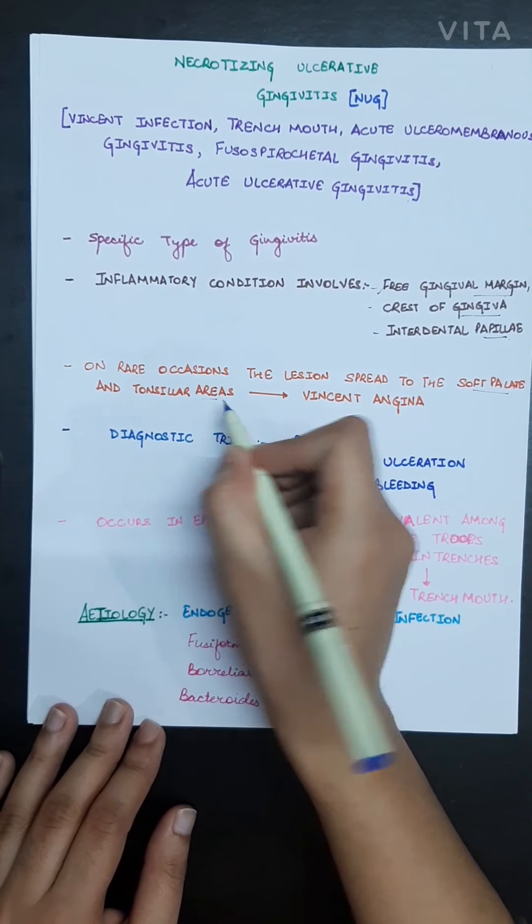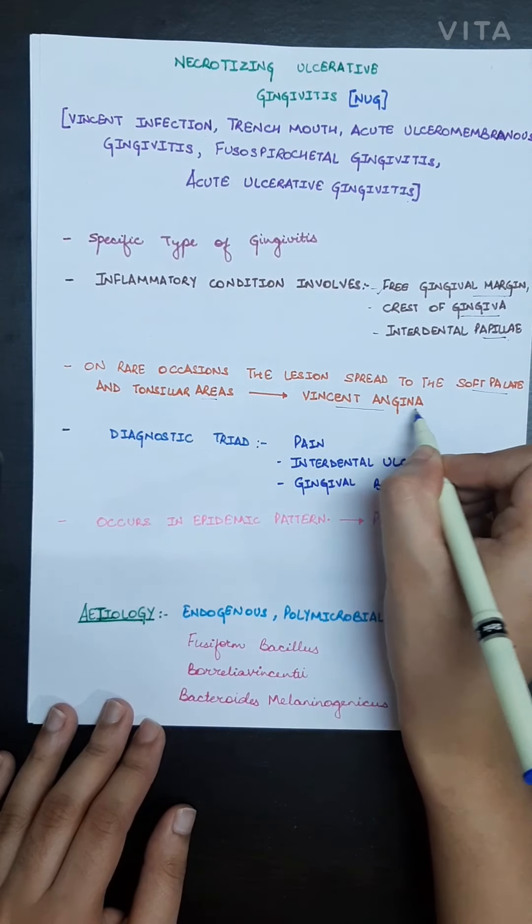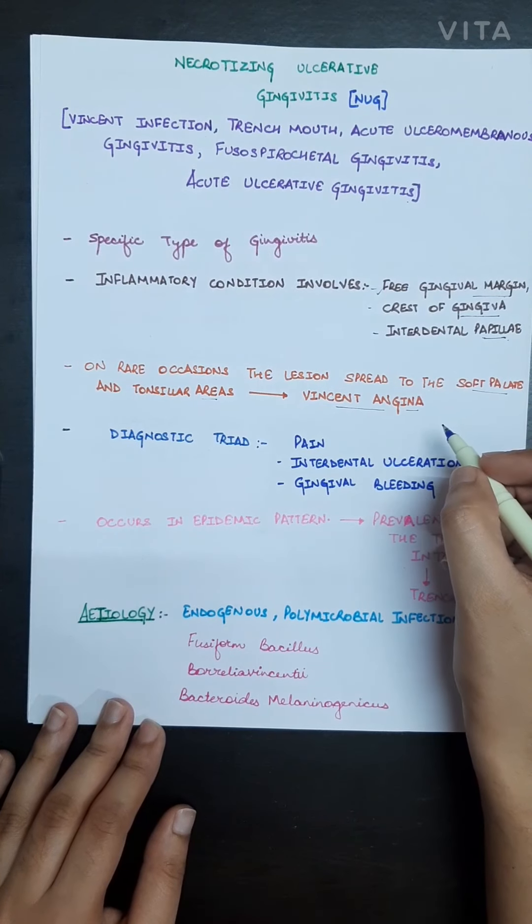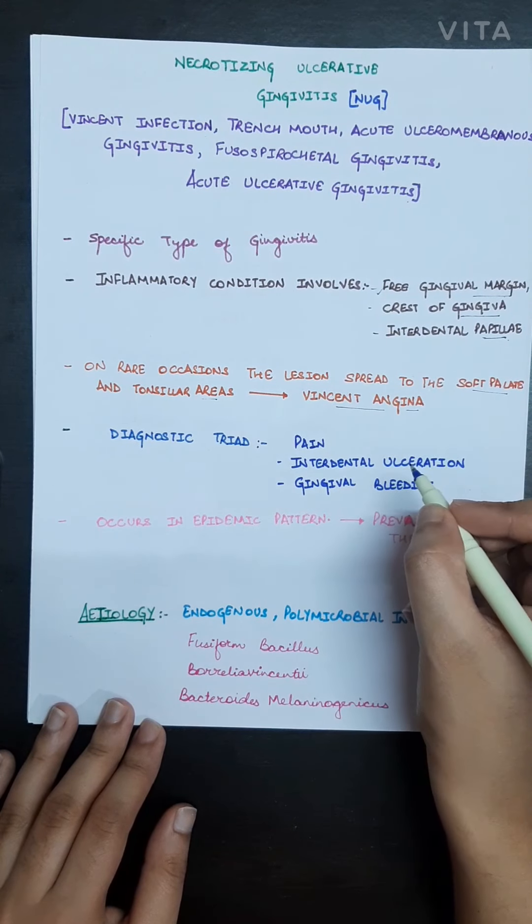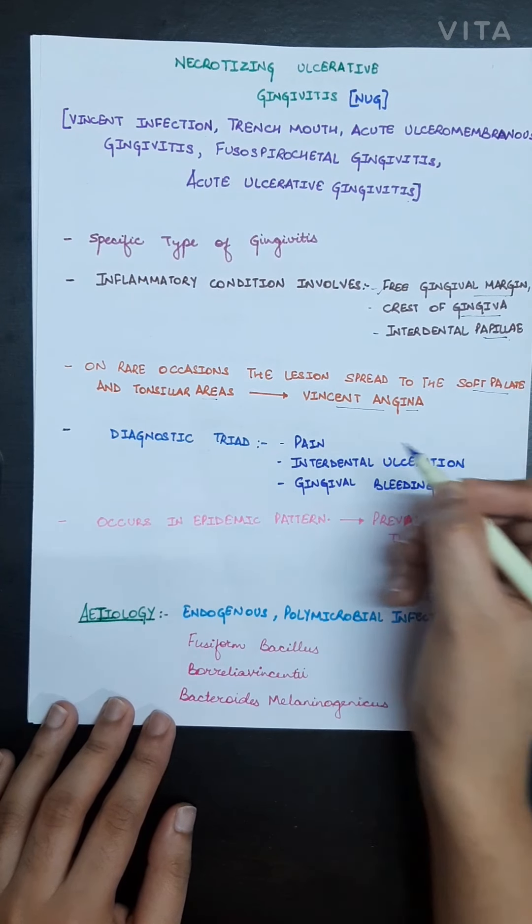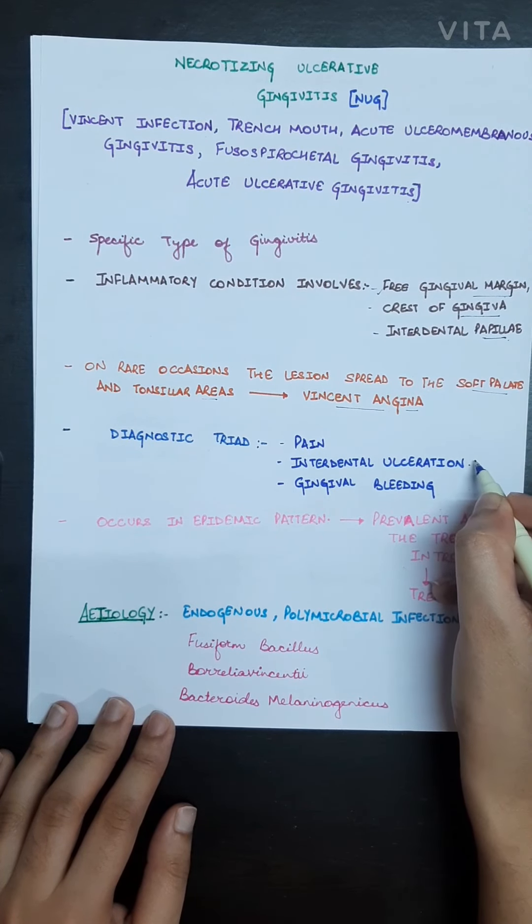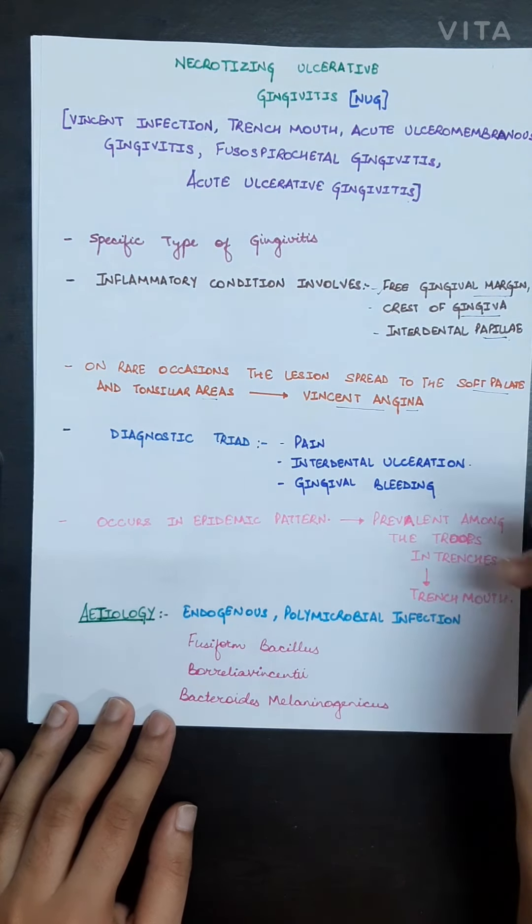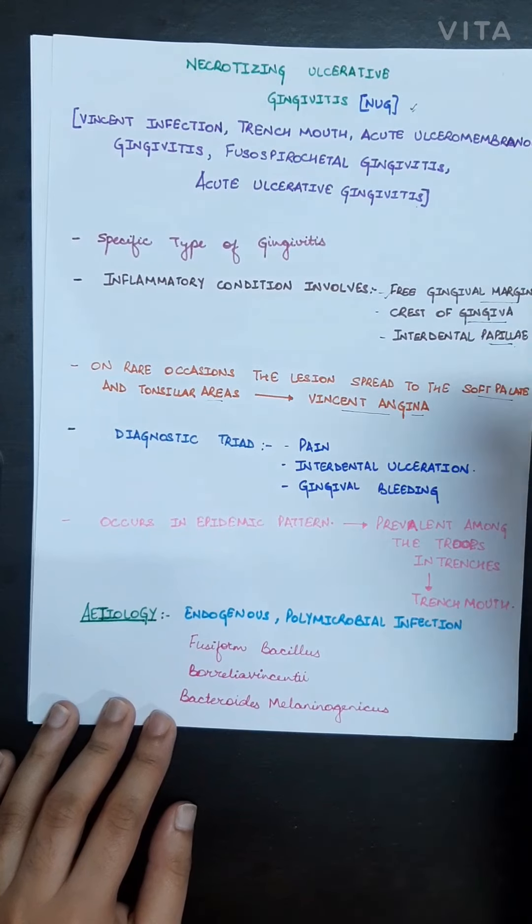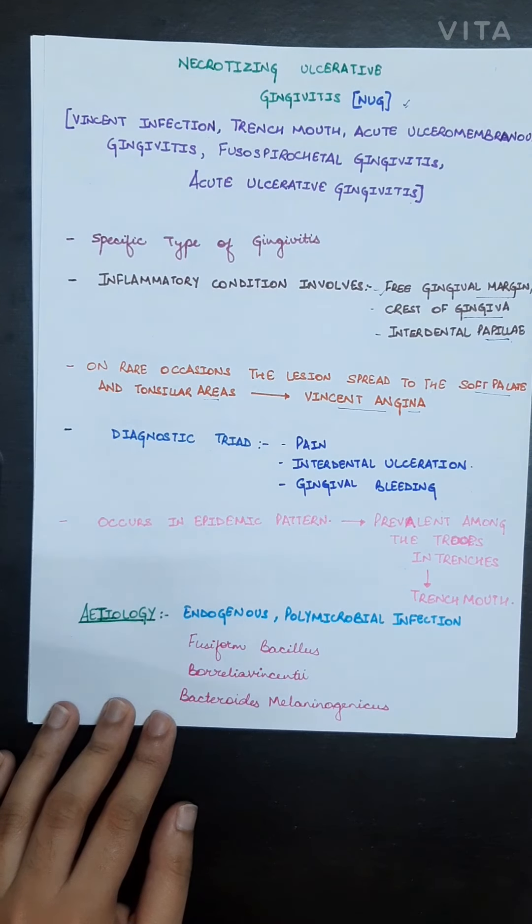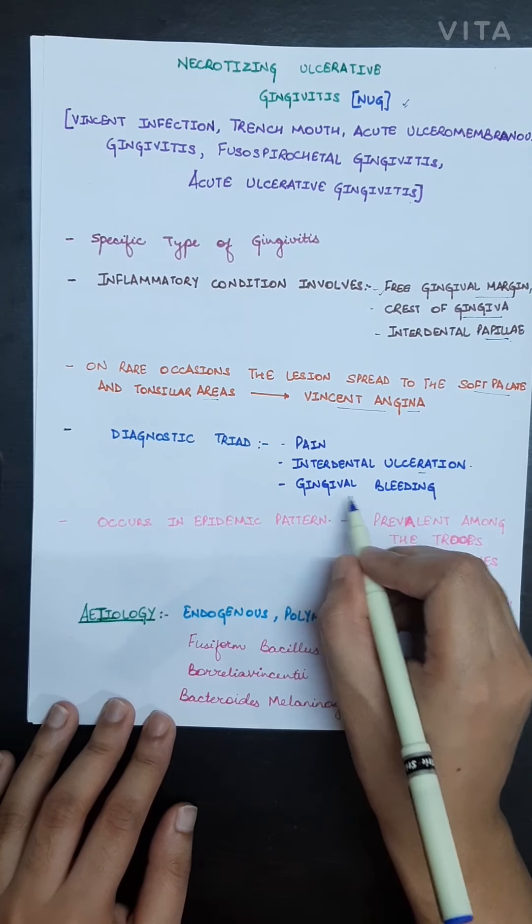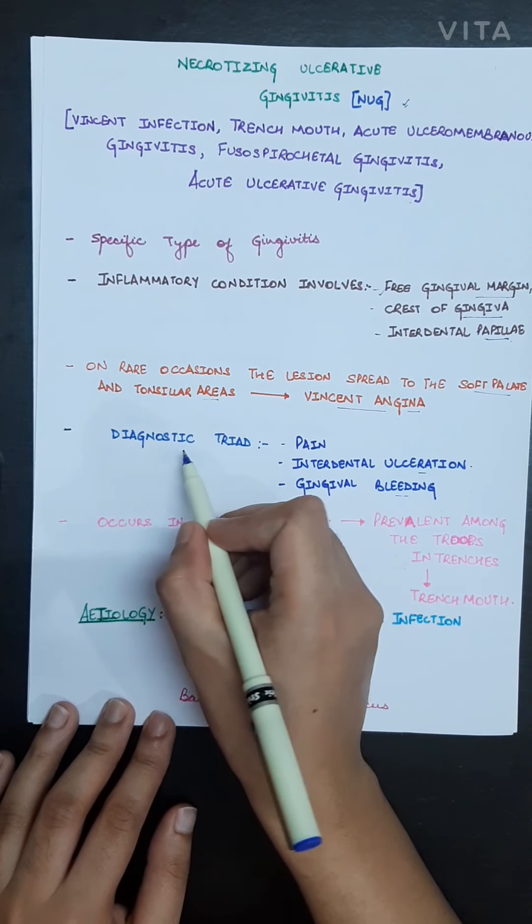That's why it is known as Vincent angina or Vincent infection. The diagnostic triad for necrotizing ulcerative gingivitis is: the patient will be suffering from pain, interdental ulceration will be there because the NUG starts from interdental papilla, and gingival bleeding. This is basically the diagnostic triad.